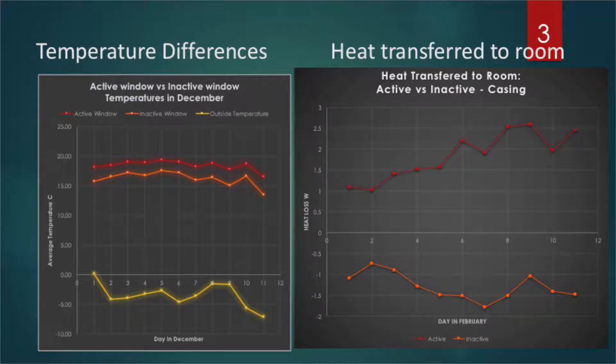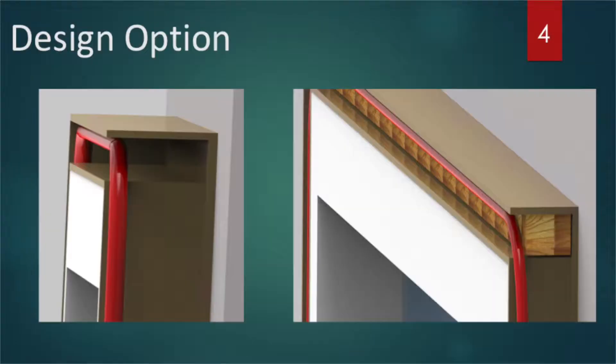There is a two percent temperature increase in the system. The next graph shows the heat transfer from the casing to the room only. The red curve shows the emitted heat to the room by the active window, and the orange curve shows the heat being lost by the inactive window.